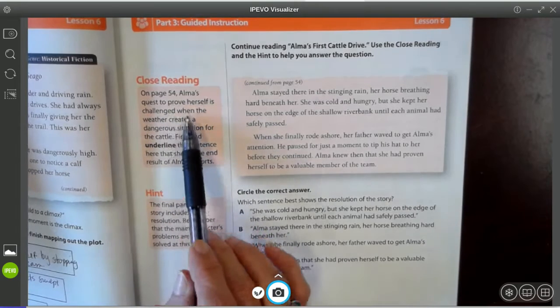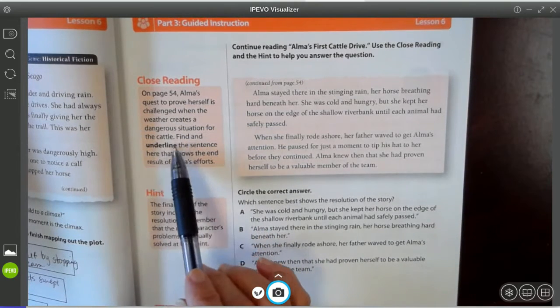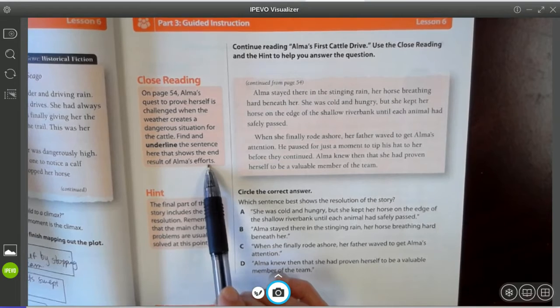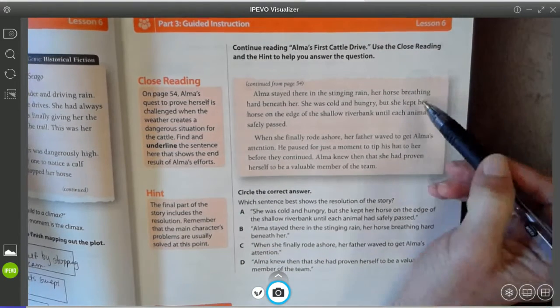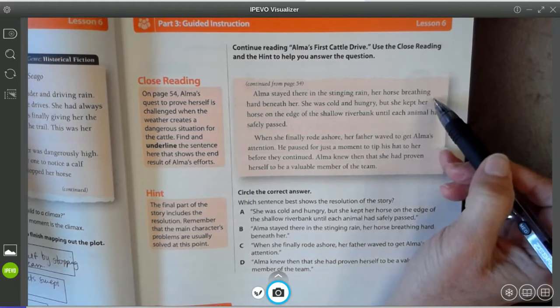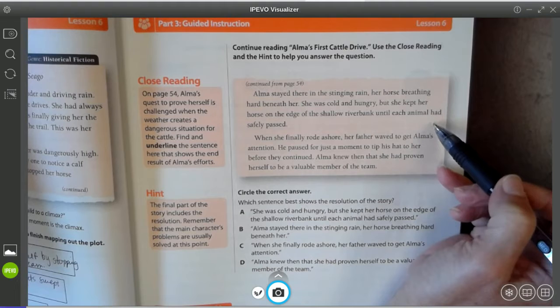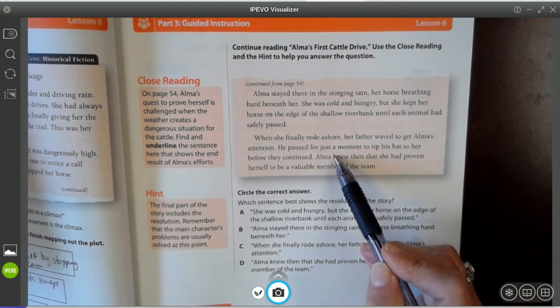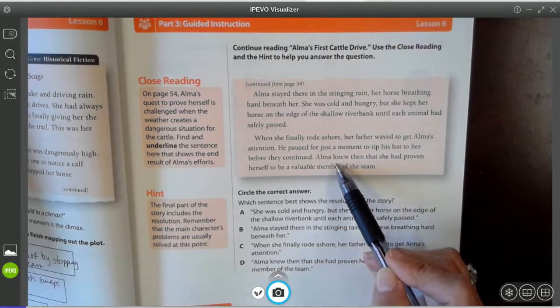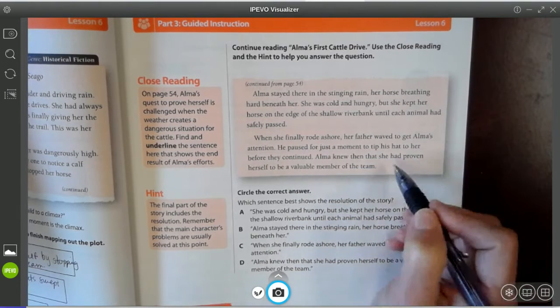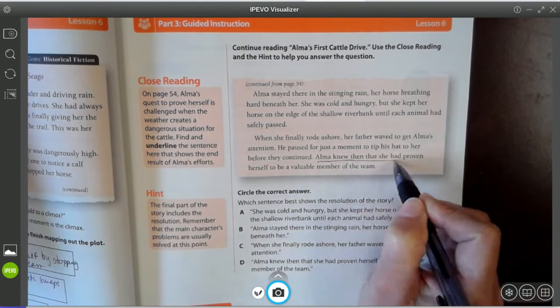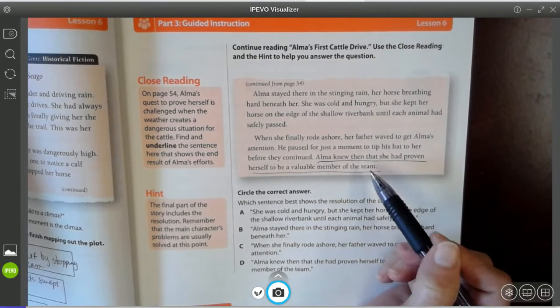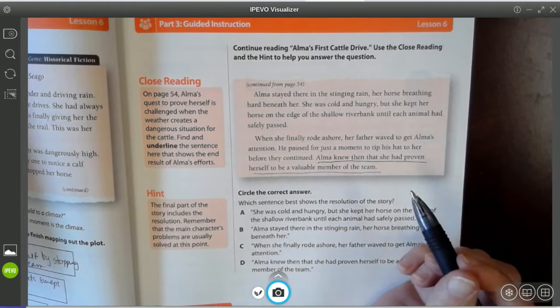The close reading helps us focus on the conflict and the following action or what happens that leads us to solving the conflict. So let's read it. It says on page 54, Alma's quest to prove herself is challenged when the weather creates this dangerous situation for the cattle. Find and underline the sentence here that shows the end result of Alma's efforts. So we're going to underline how this ends. Alma stayed there in the stinging rain, her horse breathing hard beneath her. She was cold and hungry, but she kept her horse on the edge of the shallow riverbank until each animal had safely passed. When she finally rode ashore, her father waved to get Alma's attention. He paused for just a moment to tip his hat to her before they continued. Alma knew then that she had proven herself to be a valuable member of the team. So this is when she knew. He tipped his hat and he smiled and this let her know that she had proven herself.